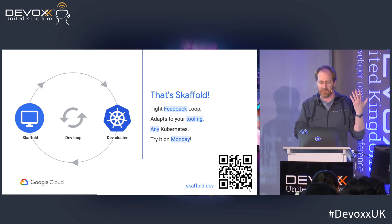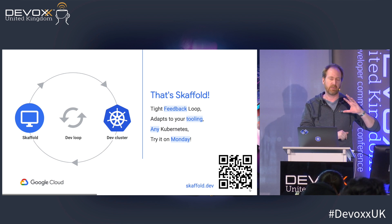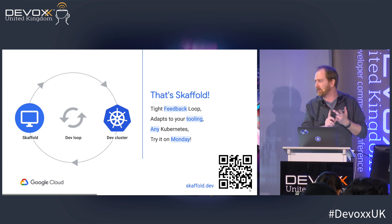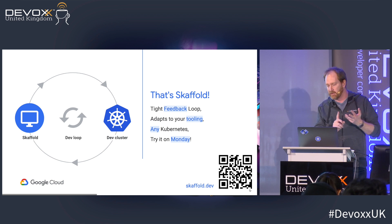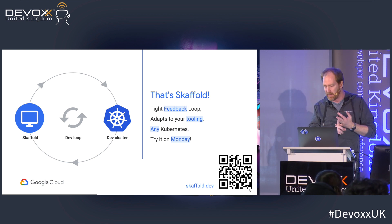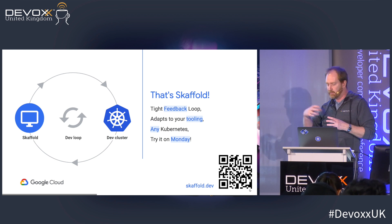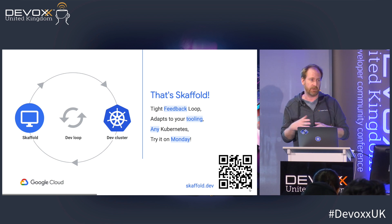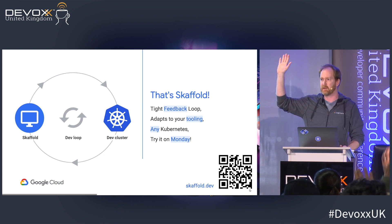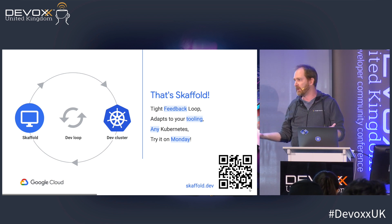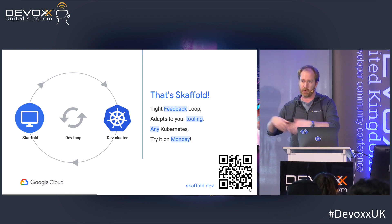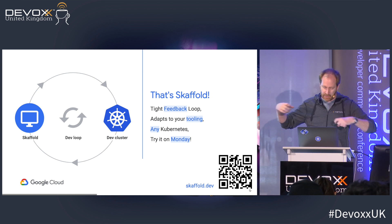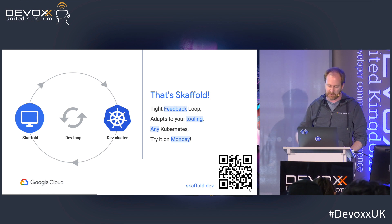That was Skaffold and Jib. Skaffold gives you a tight feedback loop and adapts to your tooling — here it used Docker build to build some images and Jib to build others. It could also use Bazel, a tool developed by Google that's now open source. For deploying your application, it can use kubectl but also Helm — if you like Helm, you can use your Helm templates and Skaffold will deploy your applications. Basically, it tries to adapt to the tools you already like, connecting the dots between those tools to give you a nice continuous deployment loop.